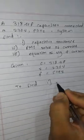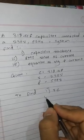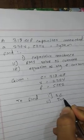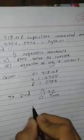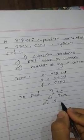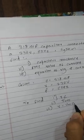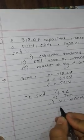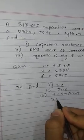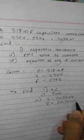First XC capacitive reactance, second RMS value of current IRMS, and third equation of voltage V equals Vm sin omega t and equation of current I equals Im sin omega t.